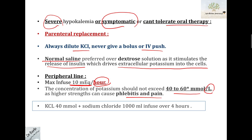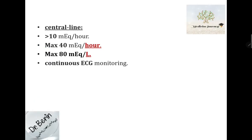Usually the order will be potassium chloride 40 mmol with sodium chloride 500 to 1000 mL, infused over at least 4 hours. If we use a central line, we can infuse more than 10 mEq per hour — up to 40 mEq per hour — and give a maximum of 80 mEq per liter. However, when using a central line, continuous ECG monitoring is required.